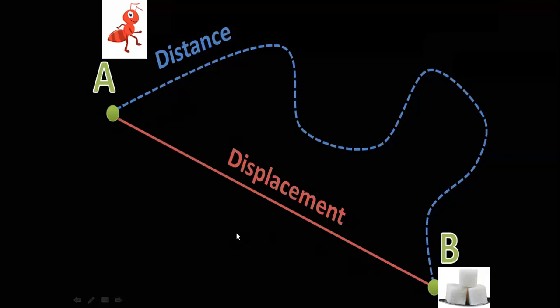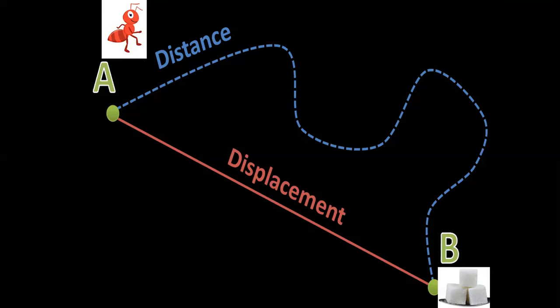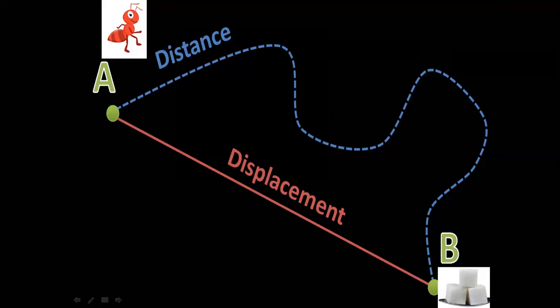Displacement is that straight-line distance between initial and final points. I want you to have this example in your notebook — just draw point A and B, draw that distance path and draw that displacement straight line. Forget about the ant and sugar cubes; this concept is to understand shortest length. Just write it down in your notebook. Take two points and draw a curved line for distance and a straight line joining A and B for displacement. This concept is very important for solving numericals — there are thousands of numericals we are going to do, so I need this concept very clear.